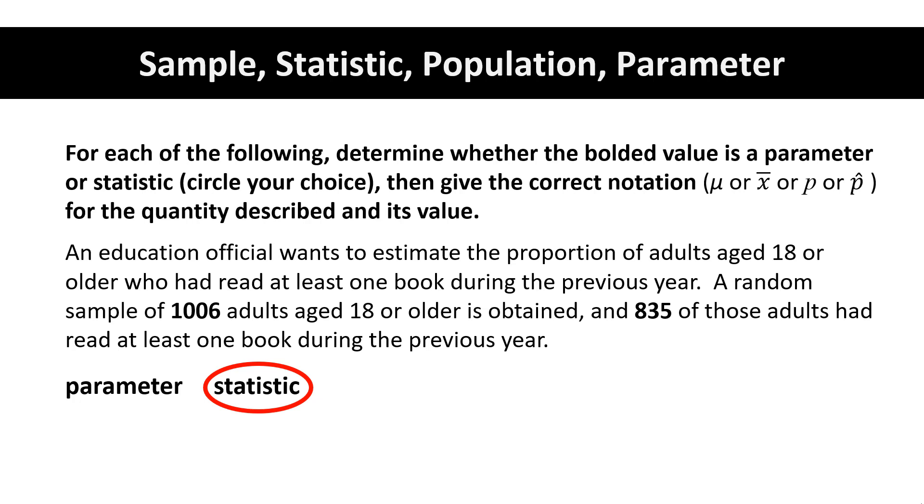So the sample proportion, the symbol is p-hat, so we say p-hat is 835 (that's our X) out of n, how many we had in the sample, 1006. And we get about 0.83 or about 83%.